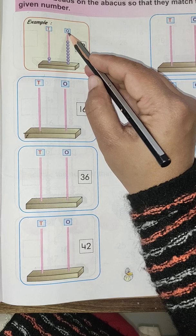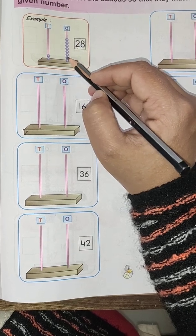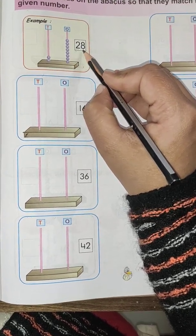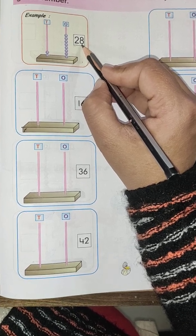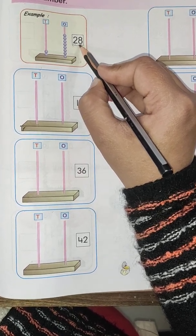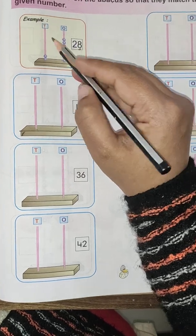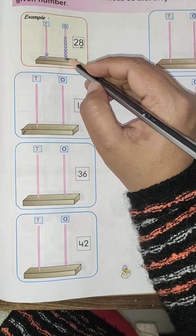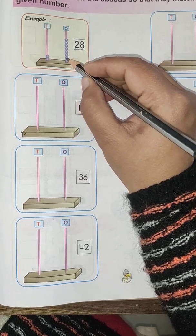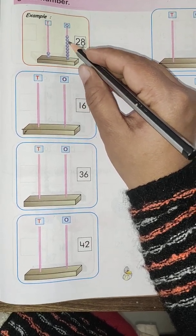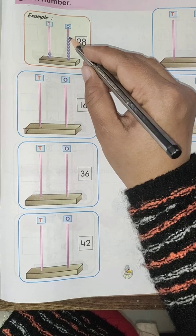This is the ones place. Now, you tell me which number is written in place of ones. Yes, the number is 8. So, we will draw here 8 beads. Count: 1, 2, 3, 4, 5, 6, 7, 8.